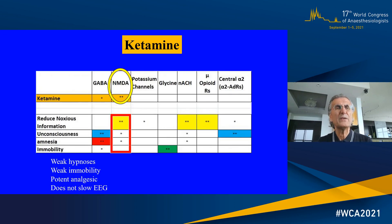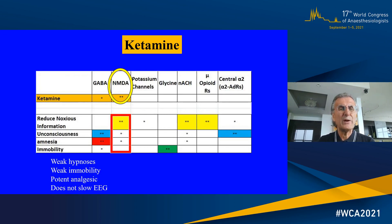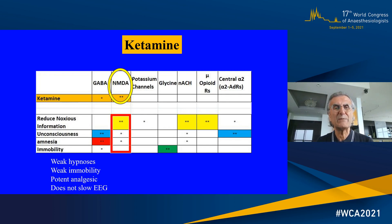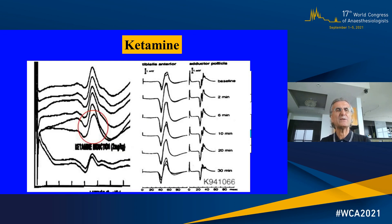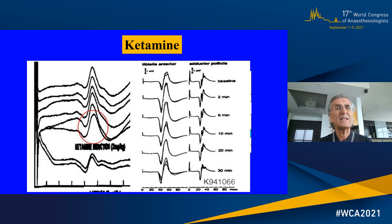Ketamine acts on NMDA receptors, providing very good analgesia and a little unconsciousness and some amnesia, but no immobility whatsoever. The advantage of ketamine is that it can enhance and enlarge the signals, which can be used to obtain better signals in patients with very weak or small signals — that is very advantageous.